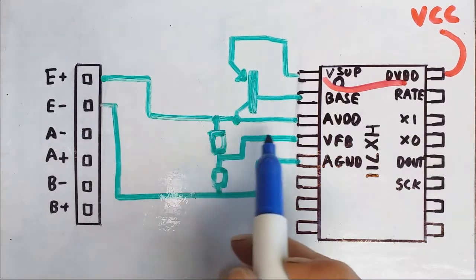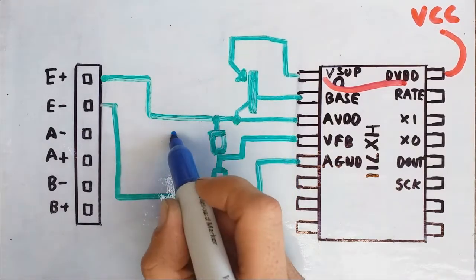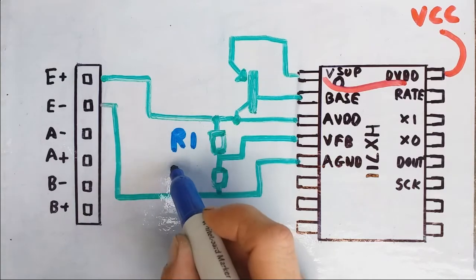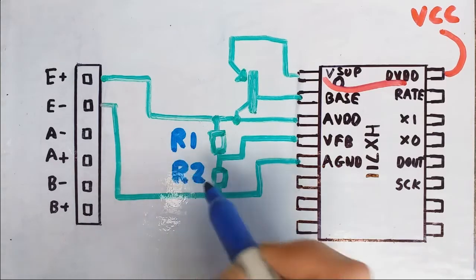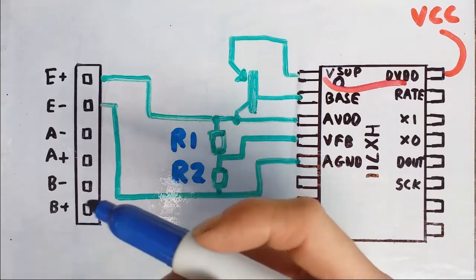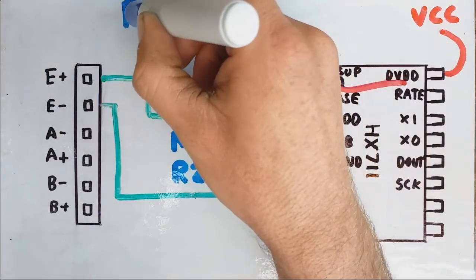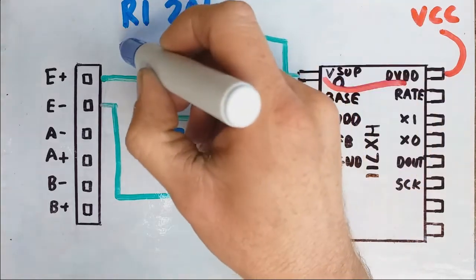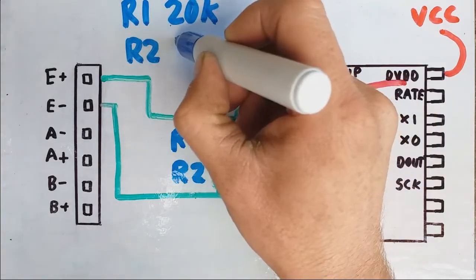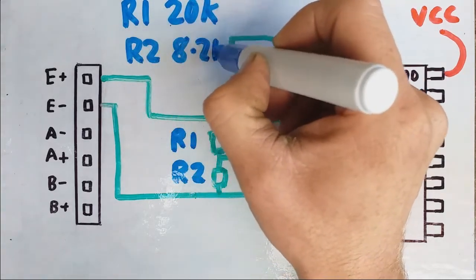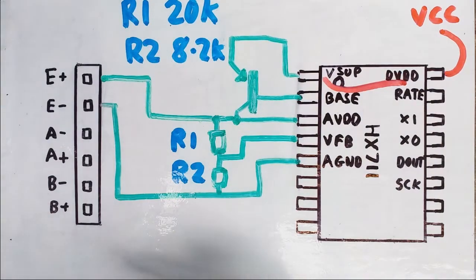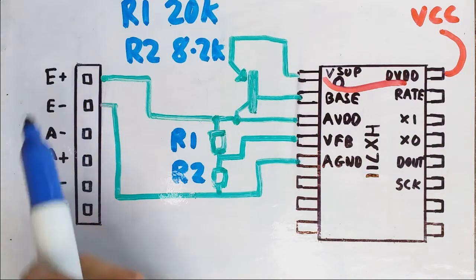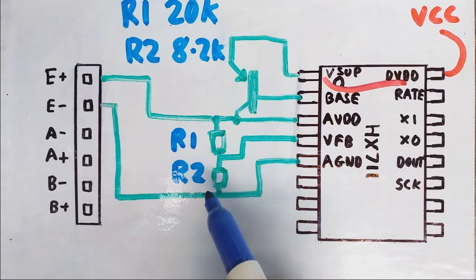The resistor above the feedback is known as R1 and below it to ground is known as R2. These are normally provided on the board as R1 equal to 20k and R2 8.2k. You can calculate the expected voltage here from the resistances used.